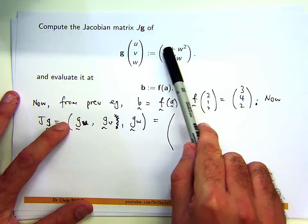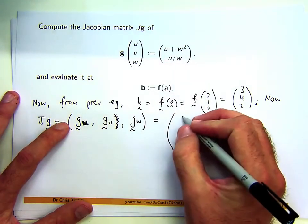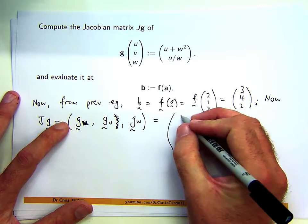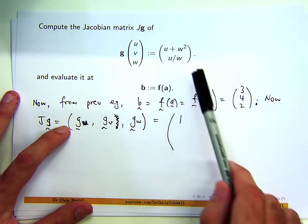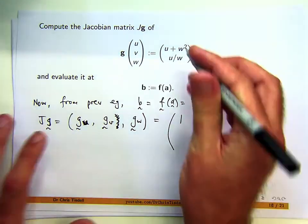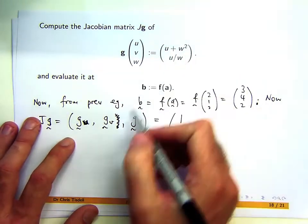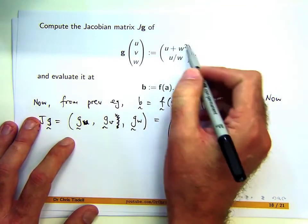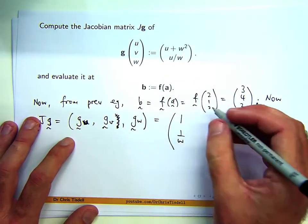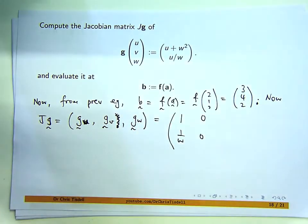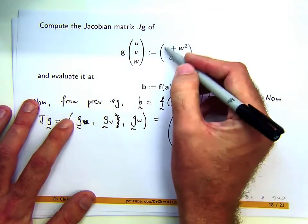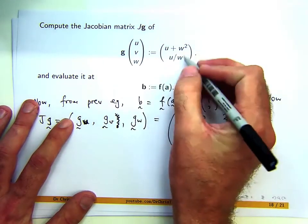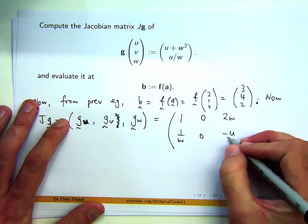Differentiating with respect to u: I get 1 in the first component and 0 in the second, and 1/w in the third. There are no v terms in any component, so the column for ∂g/∂v is all zeros. Differentiating with respect to w: I get 2w in the first component, and a corresponding expression in the second.